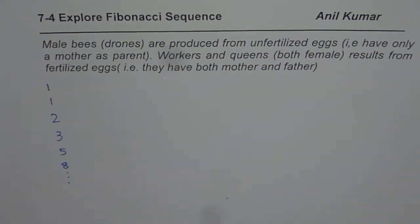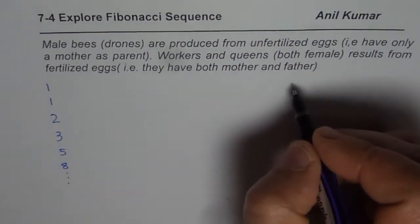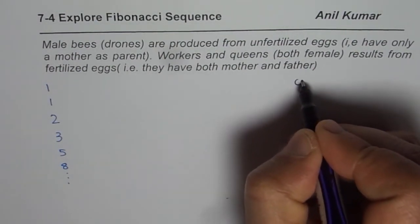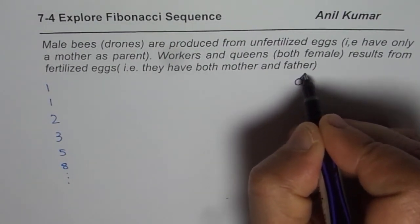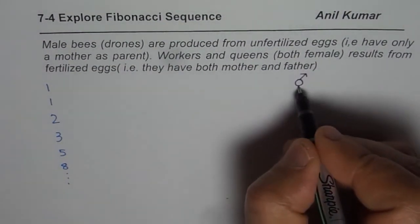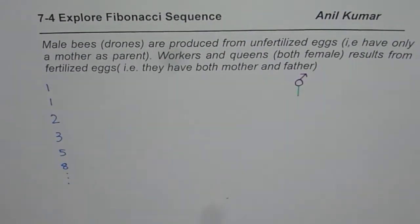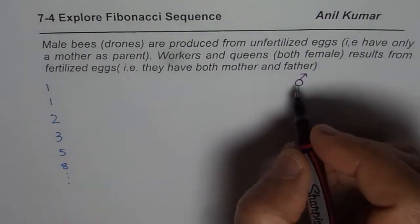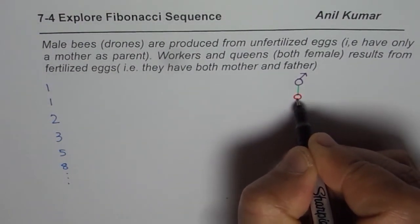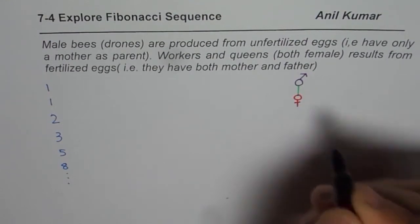Now let us try to make a family tree for the drones. I will use two different colors — this blue color for drones. These are males, so we will use the male symbol. A male will have only one parent since they are produced from unfertilized eggs, and the parent will be the queen bee. That will be a female, shown with the female symbol.